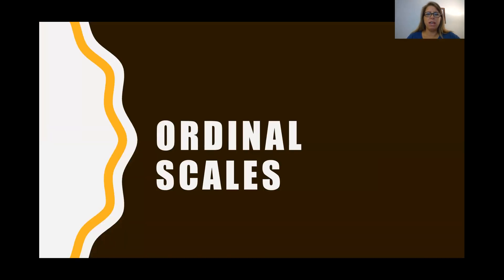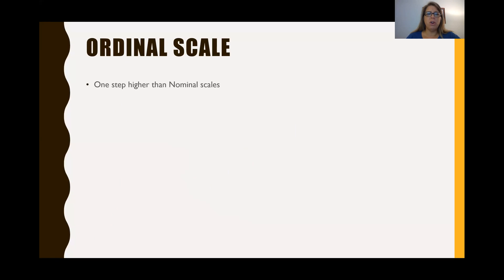All right, so ordinal scales. Ordinal scales are one step higher than nominal scales. So in the last video, we talked about nominal scales, how there was no hierarchy, the numbers were arbitrary, and the only thing that really mattered was the names of the categories. That's where the meaning was. Well, ordinal scales are one step higher than that, in that the numbers actually have meaning now. So the numbers are no longer arbitrary, they have meaning.